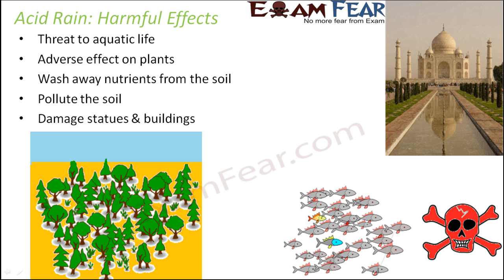Acid rain also damages statues and buildings — this is a very crucial harmful effect. The Taj Mahal is the best example. If you compare the Taj Mahal from 20-25 years back to what it looks like right now, you can see it has blackened a lot. Acid rain causes very fast erosion. Worst affected are monuments made of sandstone or limestone, as such rocks are more susceptible to erosion. The marbles of the Taj have been gradually corroded over the years by acid rain — the acids blacken the marbles and that is how statues and buildings are damaged.